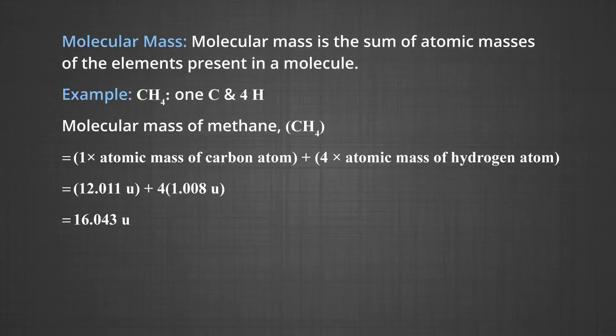For example, a molecule of methane (CH₄) contains one carbon atom and four hydrogen atoms. The molecular mass of CH₄ is: 1 × (atomic mass of carbon) + 4 × (atomic mass of hydrogen) = 12.011u + 4 × 1.008u.